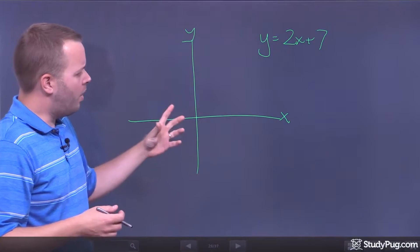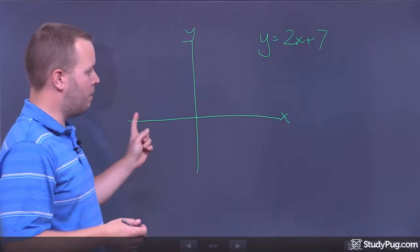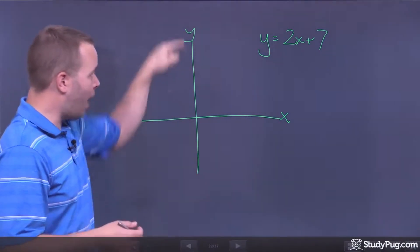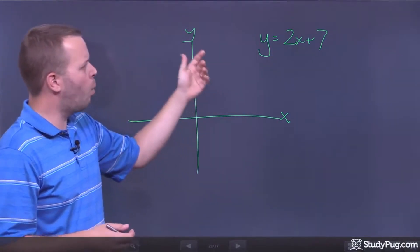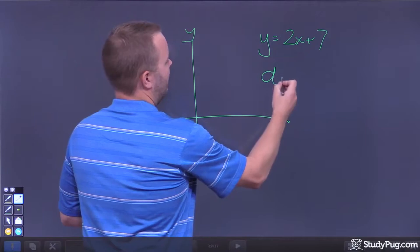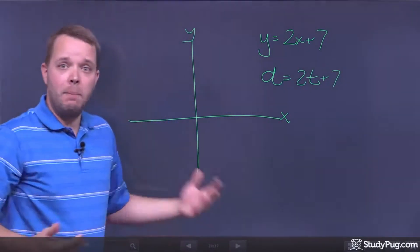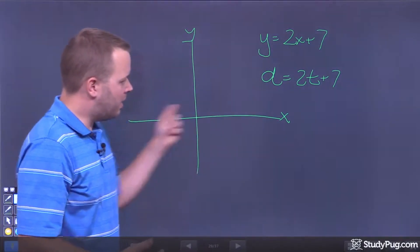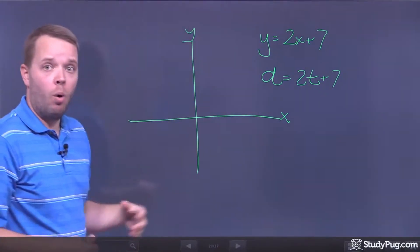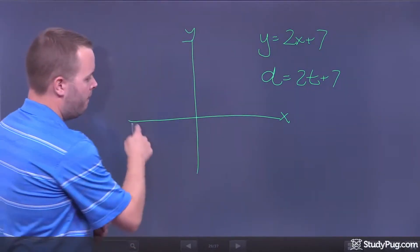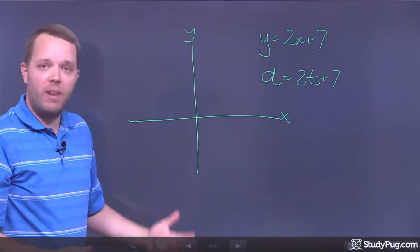Understand that this doesn't have to be X and this doesn't have to be Y. You could be talking about the time it takes to travel somewhere — the distance could be on one axis and the time on the other. So instead of a Y and X equation, you'd have something like D equals 2T plus 7. Instead of thinking specifically of X and Y, I want to think of independent and dependent, or better yet, function inputs and function outputs, or the value of the function.